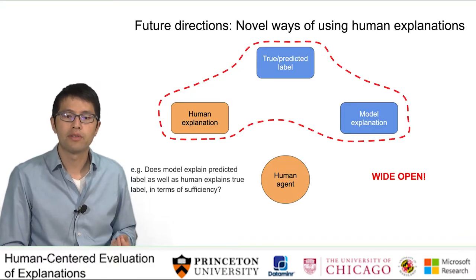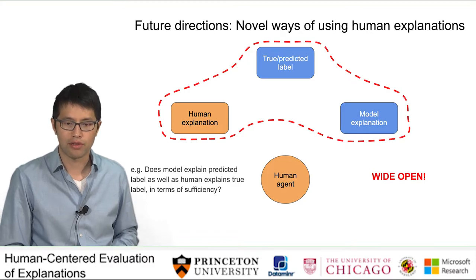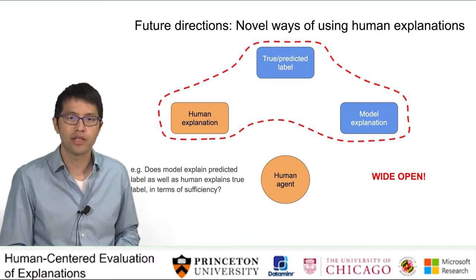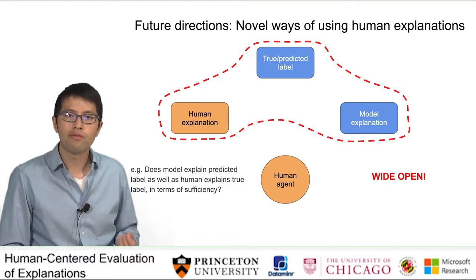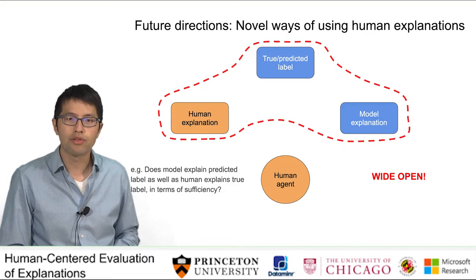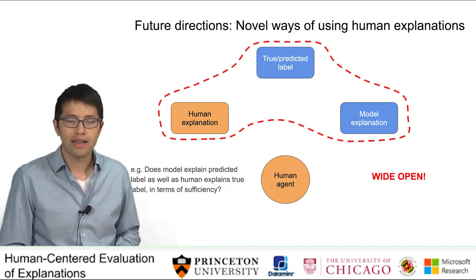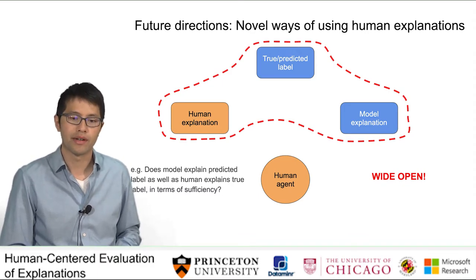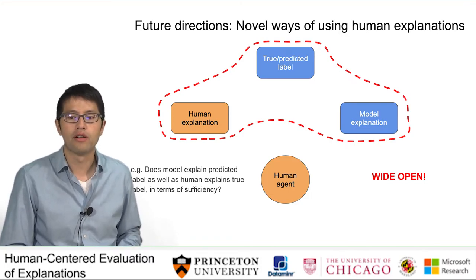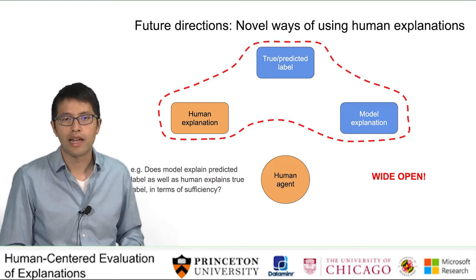The second future direction is to develop novel ways of using human explanations. Human-provided explanations can enable benchmark-style studies that are complementary to application-grounded evaluations with human subjects. However, as we discussed, using human-provided explanations directly as ground truth labels may not be ideal. It is likely more fruitful for the community to embrace properties of human explanations and develop novel ways of using them. One idea Sam Carlton put forward is to compare the sufficiency of model explanations with that of human explanations.